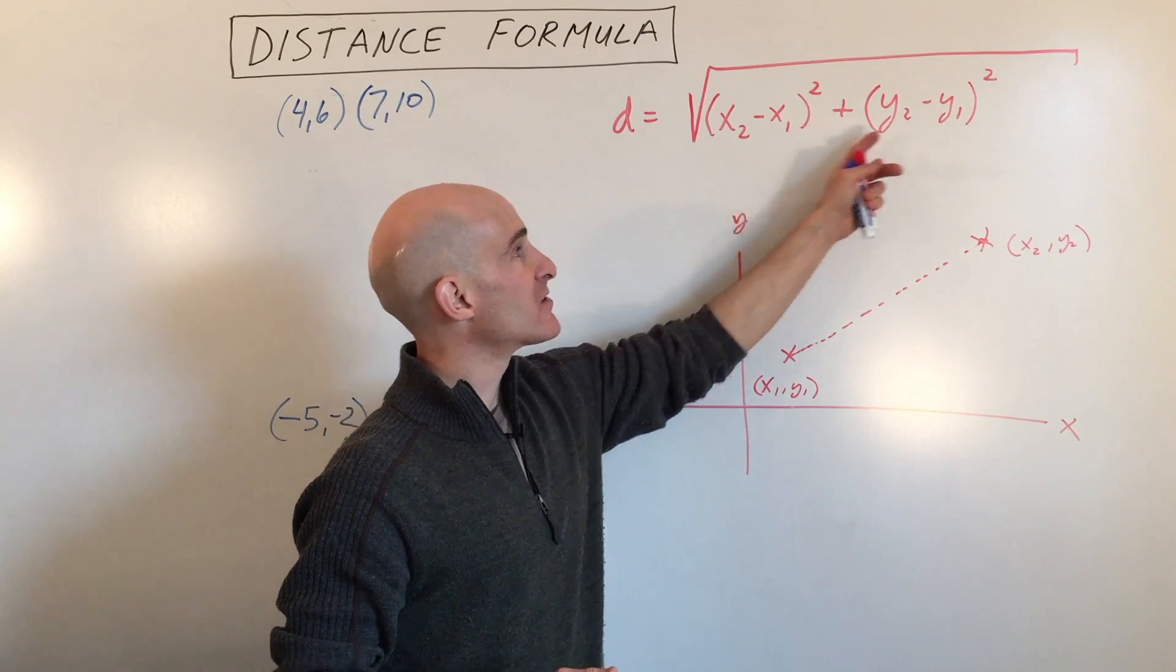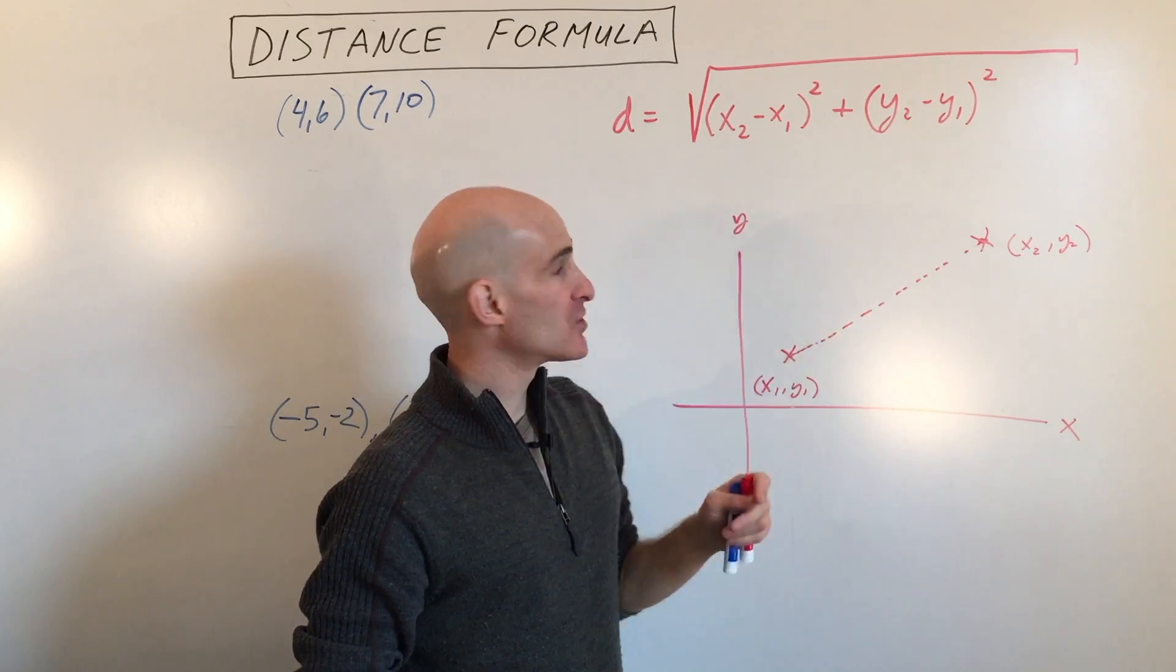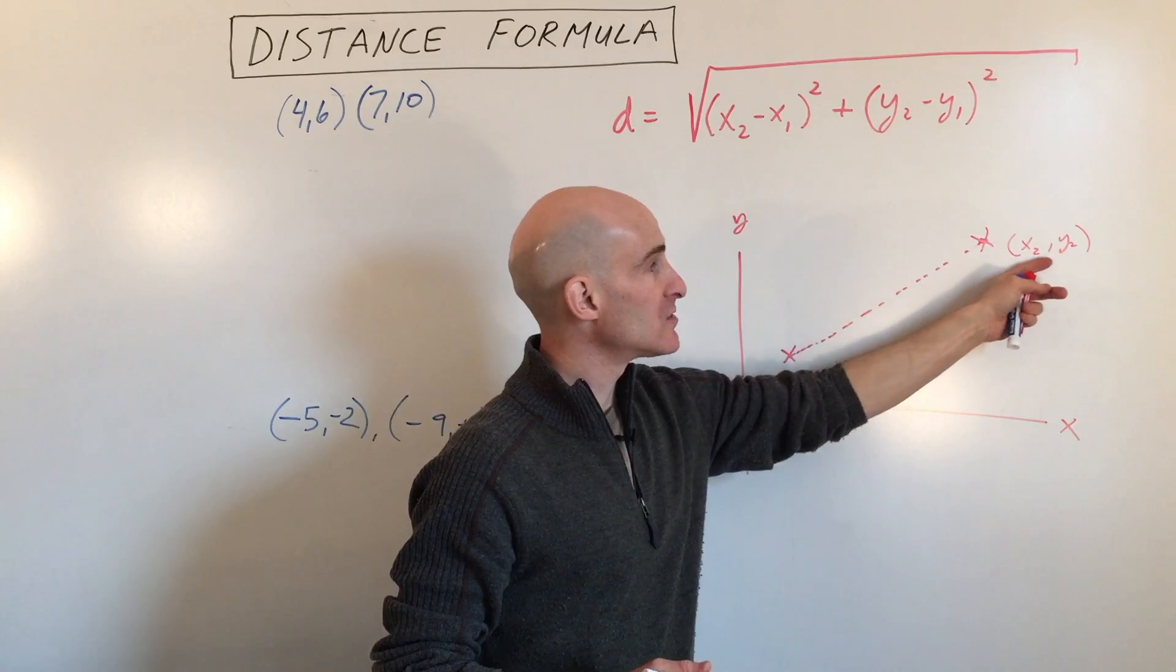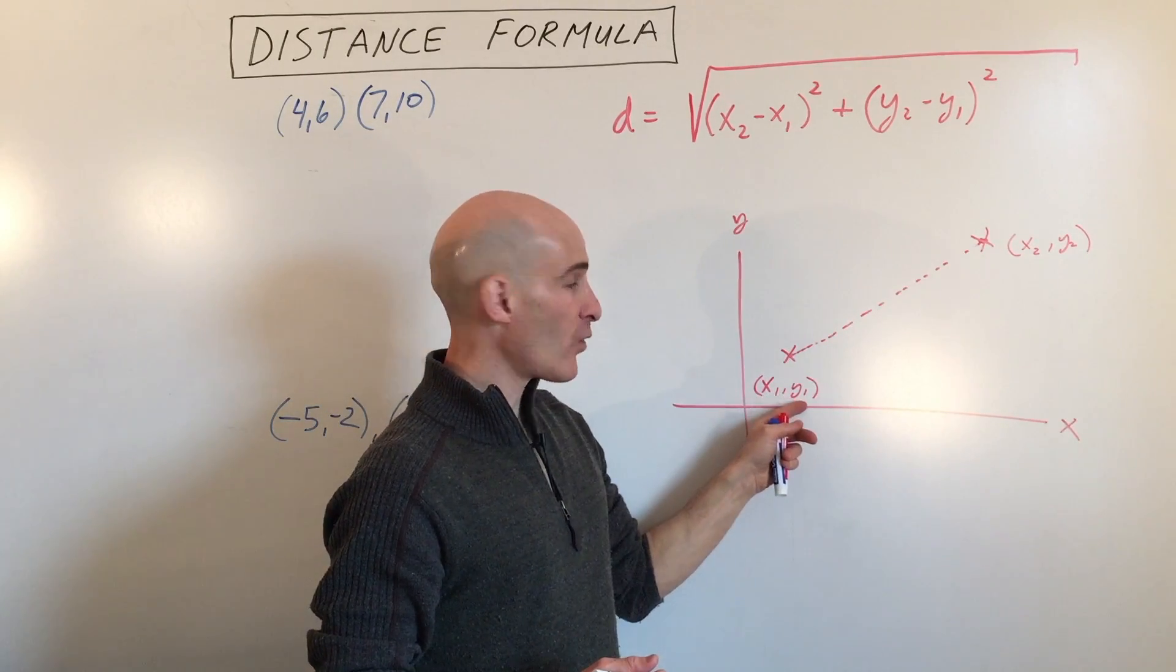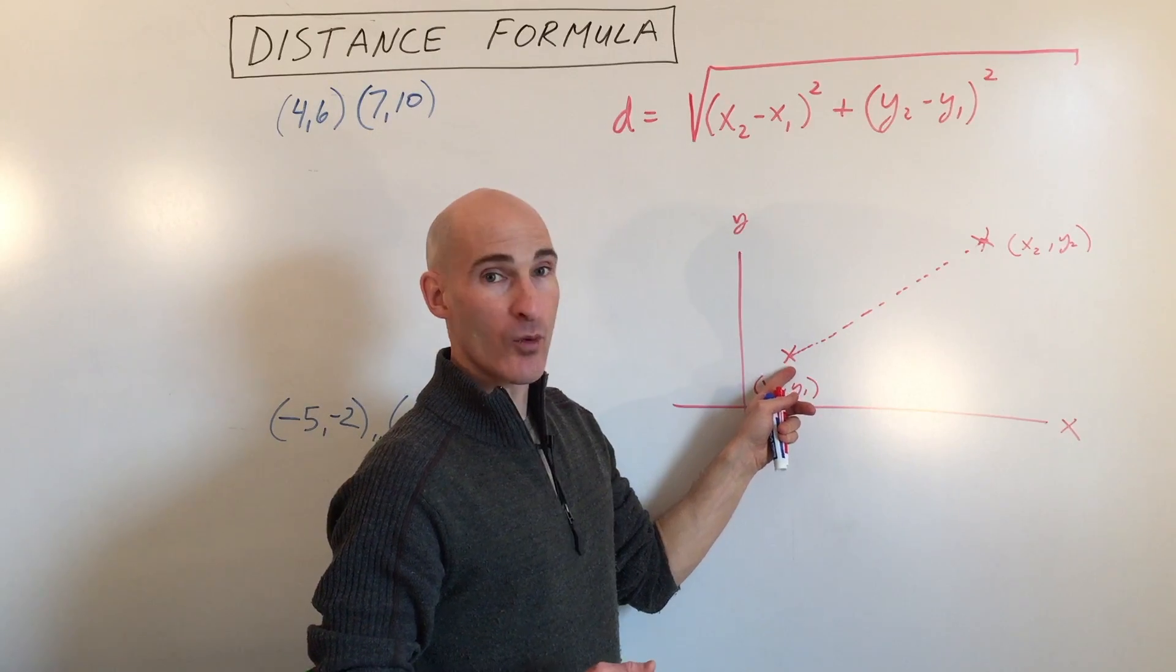When you look at these subscripts here, see the 2 and the 1, that's referring to point number 2. So see x2, y2, this is like a second point. And x1, y1, that's referring to point number 1.